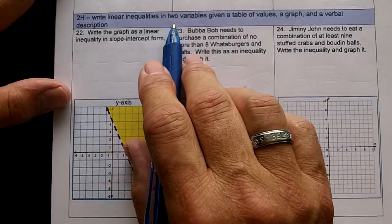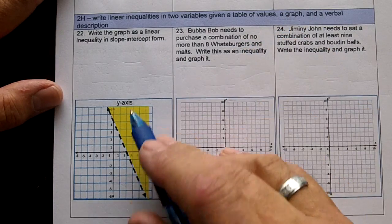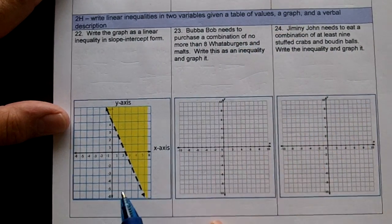Write linear inequalities in two variables given a table of values, a graph, and a verbal description. So we have graphs and two verbal descriptions here.